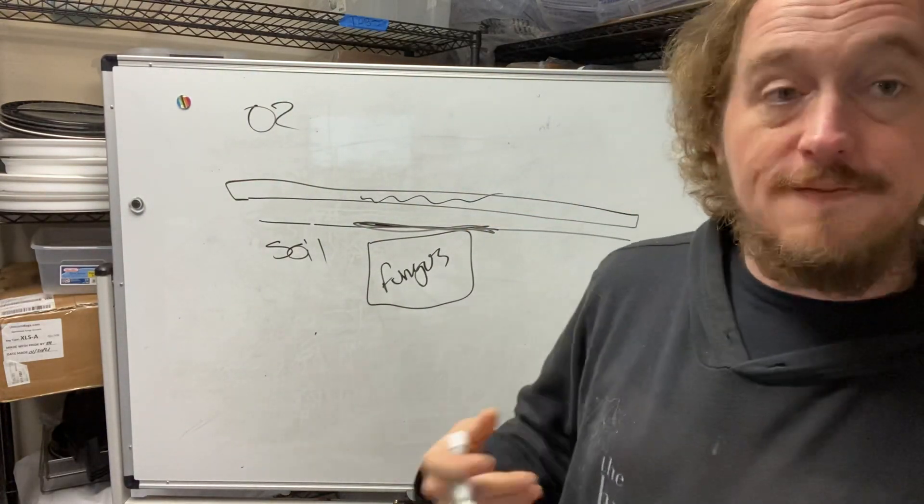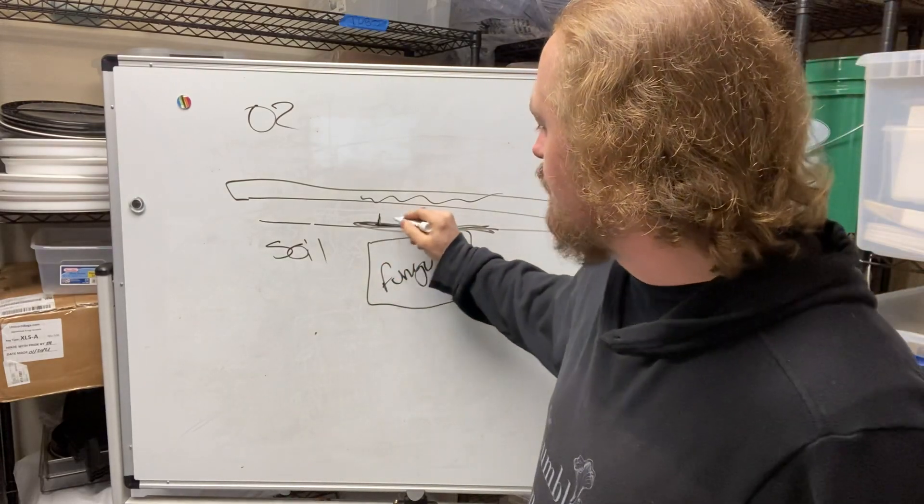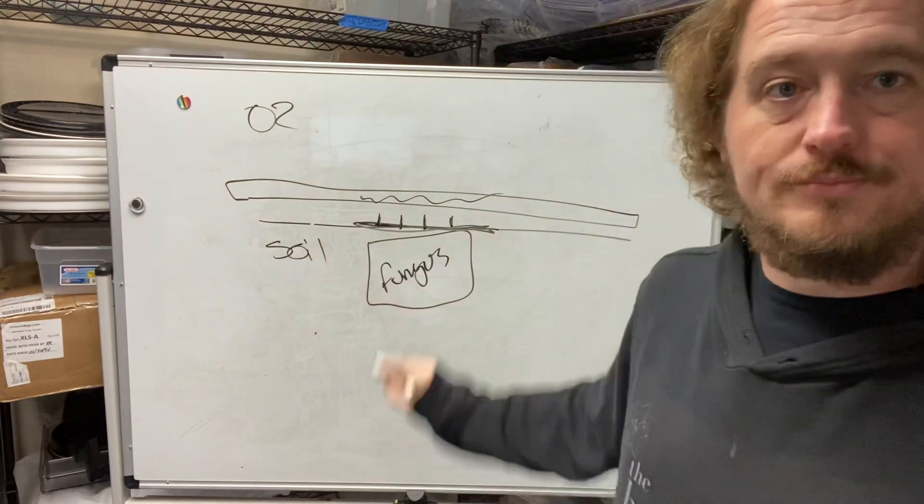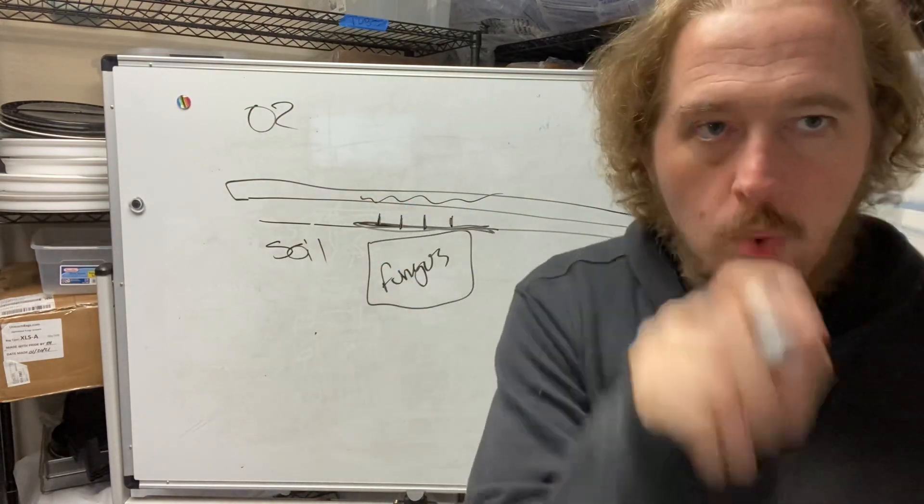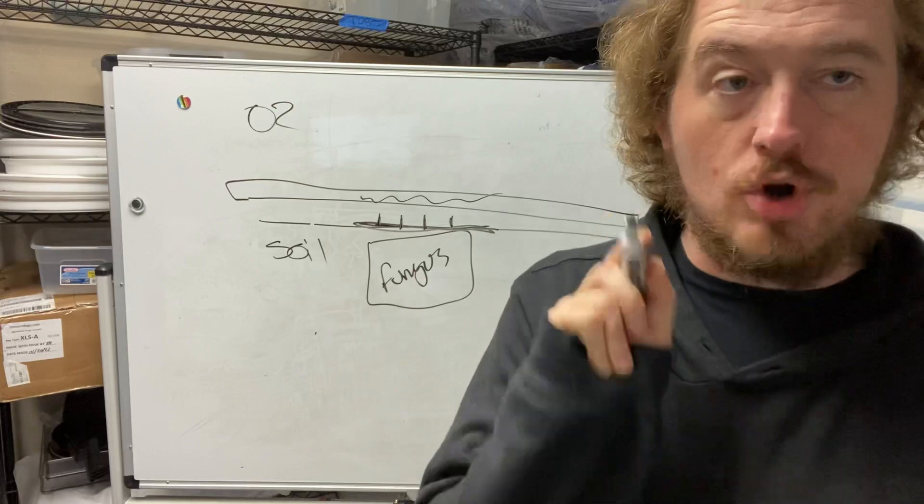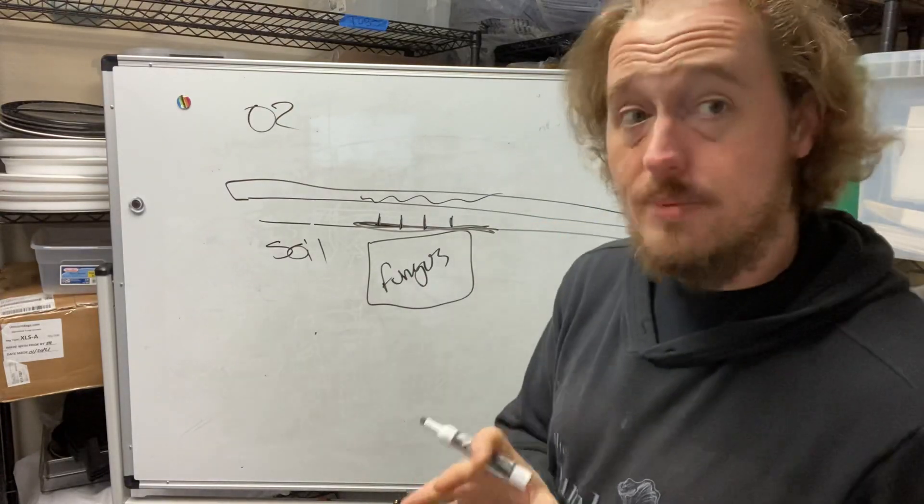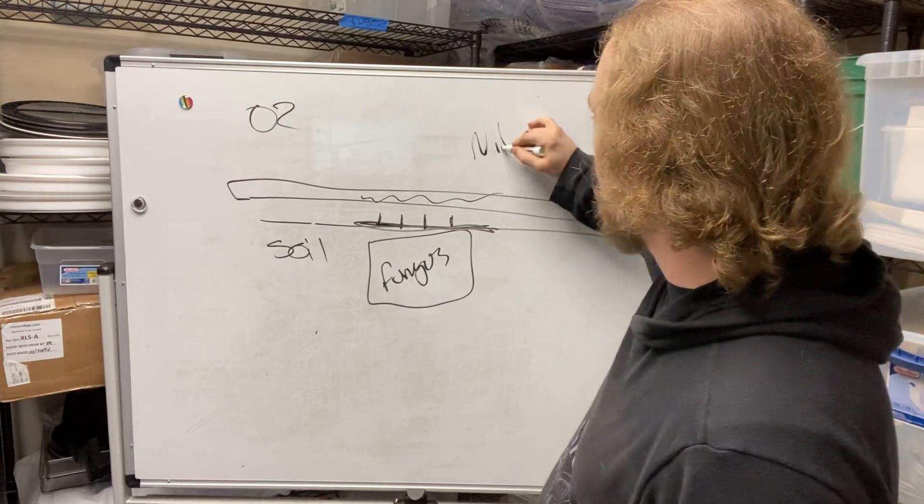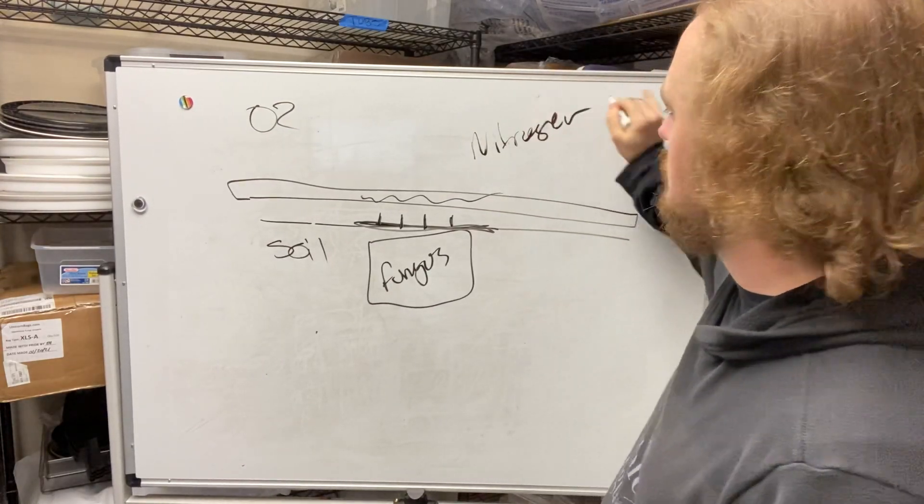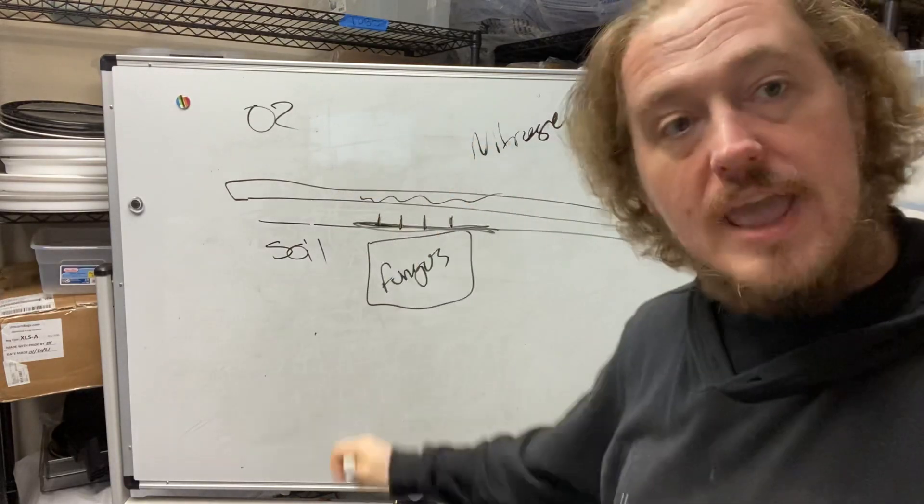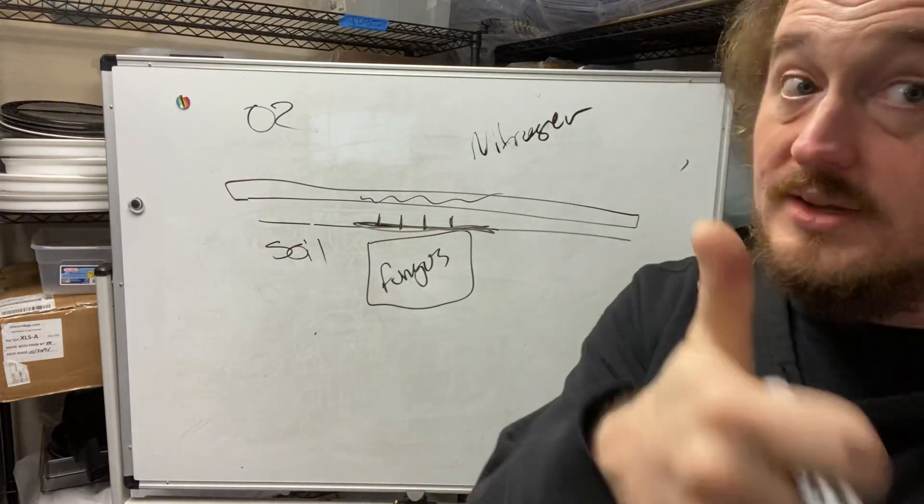So when a fungus starts to fruit, it puts out baby mushrooms called pins. See these? Call these pins, those little spikes. What is the environment these pins are now in? This has a couple of attributes. Number one, it is high in nitrogen. It is extremely high in nitrogen because these are leaves from organics and things like that. That's number one.